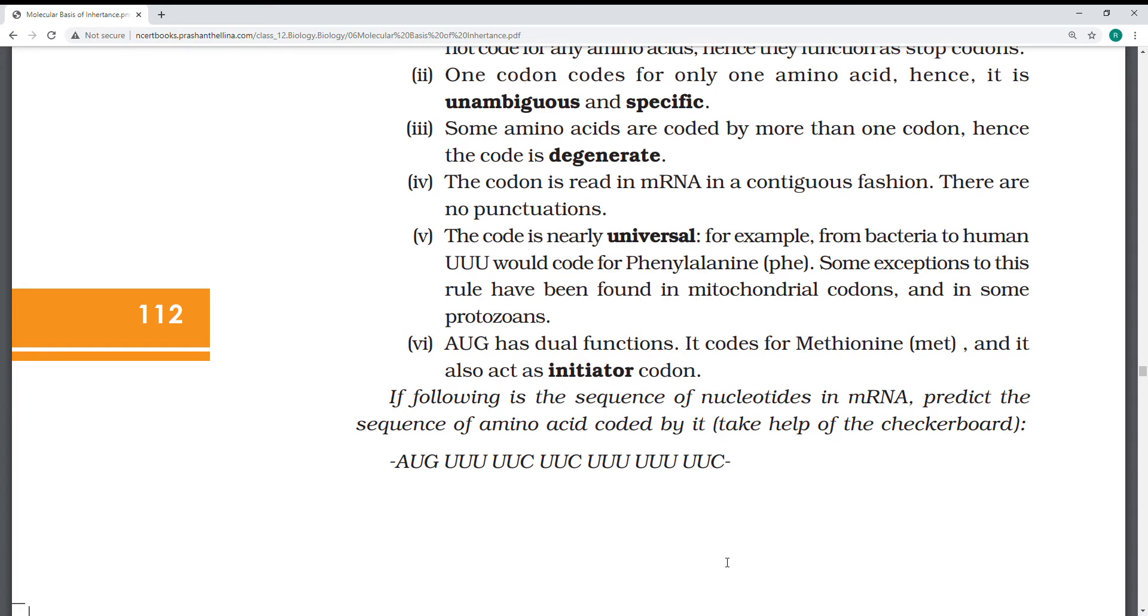These codes are always universal from bacteria to humans. The UUU codon is the same for all organisms, wherever, not dependent on habitat. Universal means the same. UUU being phenylalanine, some have been found in mitochondrial codons in some protozoans. AUG has a dual function - it codes for methionine and also acts as an initiator codon to start protein synthesis.